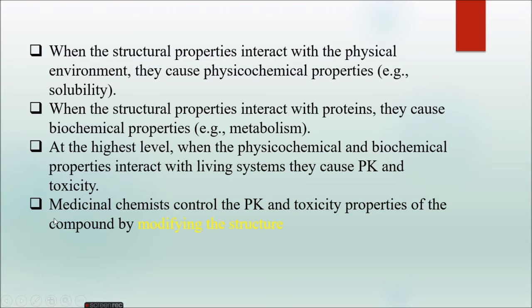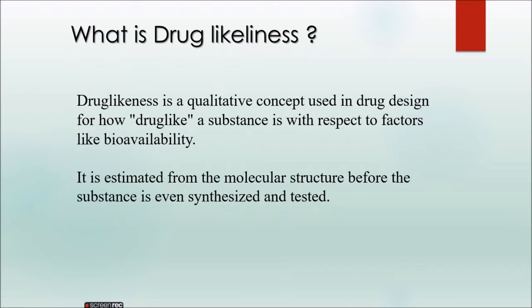This is very important as it determines whether the drug is suitable for mankind or for the organisms for which the drug has been prepared. Medicinal chemists control the pharmacokinetics and toxicity properties of the compound by modifying the structure — it all starts by modifying the structure. That is the major and primary thing which the chemist should do.